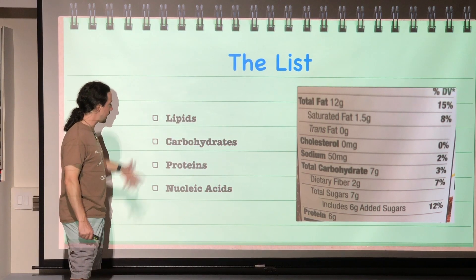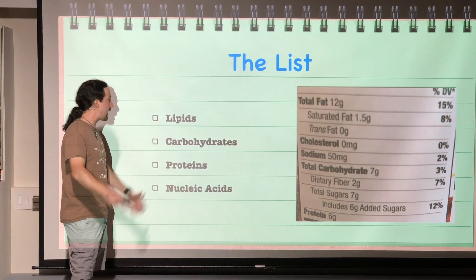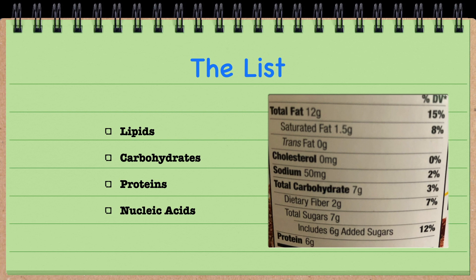Lipids first, carbohydrates second, proteins third, nucleic acids last. And before we get to the specific types of biomacromolecules, we're going to look at how you build or how you break down these molecules.